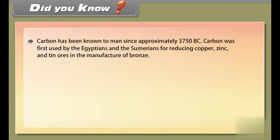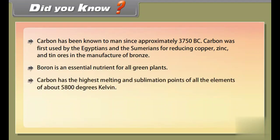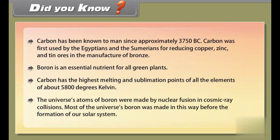Did you know? Carbon has been known to man since approximately 3750 BC. Carbon was first used by the Egyptians and the Sumerians for reducing copper, zinc and tin ores in the manufacture of bronze. Boron is an essential nutrient for all green plants. Carbon has the highest melting and sublimation points of all the elements of about 5800 degrees Kelvin. The universe's atoms of boron were made by nuclear fusion in cosmic ray collisions. Most of the universe's boron was made in this way before the formation of our solar system.